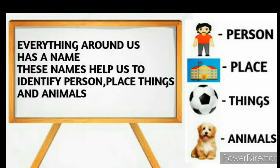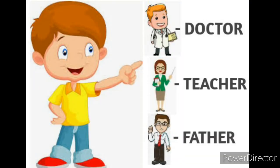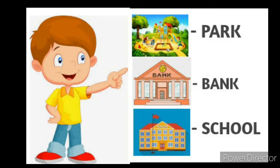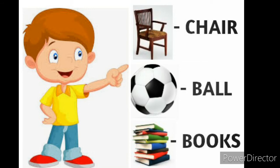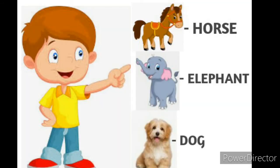Let's see the examples. Person: doctor, teacher, father — these are examples of a person. Place: park, bank, school — these are examples of a place. Things: chair, ball, books — these are examples of things. Animals: horse, elephant, dog — these are examples of animals.